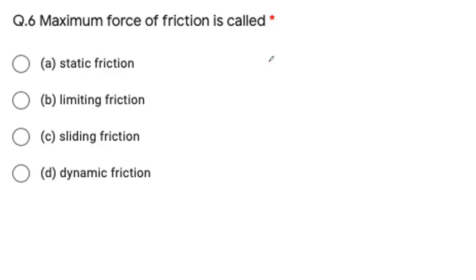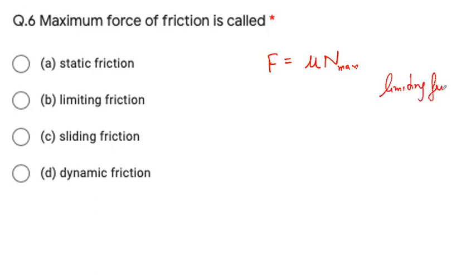U = 30, so U² = 900. Sin(30°) = 1/2, so sin²(30°) = 1/4. Dividing by 2g (taking g = 10), we get 900 × (1/4) / 20 = 225/20. When you solve it, this comes out to be 11.25 meters.